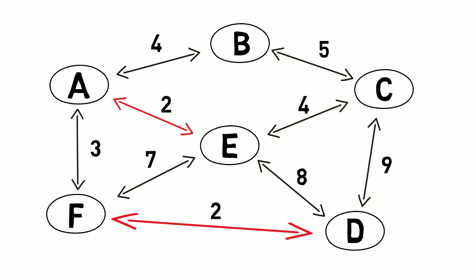We then look at the next smallest. It looks like A and F have a weight of 3 between them. We can use that and we now have a connection between E, A, F, and D.